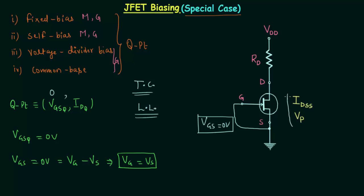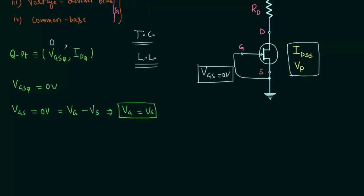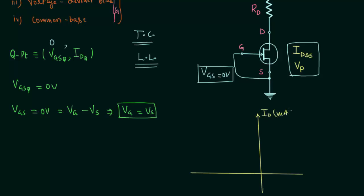We will use Shockley's equation to plot the transfer curve. IDSS and VP are already given. IDSS is the maximum drain current, VP is the pinch-off voltage, and Shockley's equation is: ID = IDSS × (1 − VGS/VP)². We have discussed how to obtain the transfer curve in all four previous cases, so I will directly plot the transfer curve for the n-channel JFET. I will first draw the x-axis and then the y-axis.